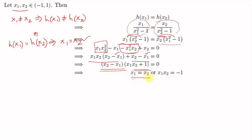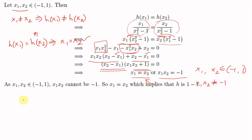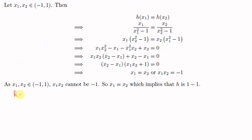Since x₁ and x₂ are points from the open interval (-1,1), their product x₁x₂ cannot equal -1. Therefore the only possibility is x₁ = x₂, which implies that h is one-to-one.